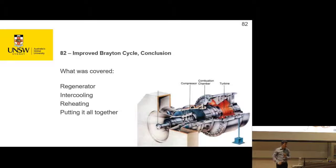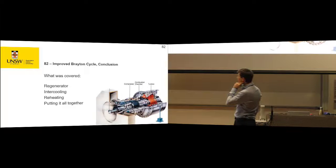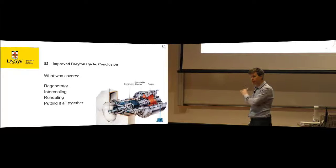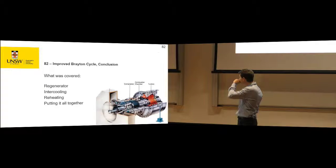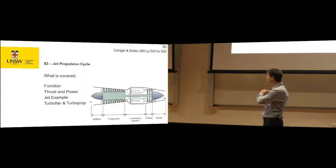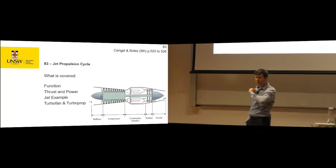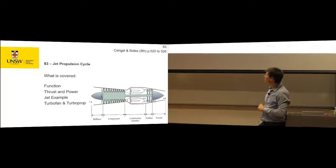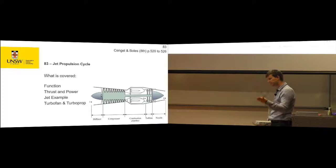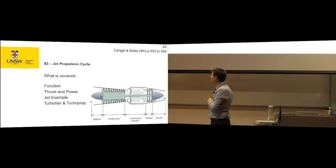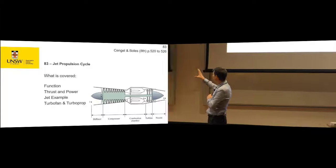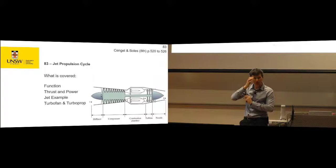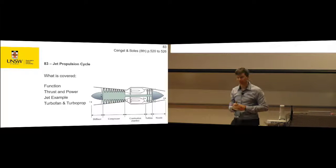We can modify our Brayton cycle to improve the thermal efficiency of the power we get out of the turbines. But what if we don't want power out of the turbine as a goal? An example of that - and I think this is the only cycle we'll do in the heat engine system where this applies - is the jet propulsion cycle, which doesn't actually want electrical power out of the turbine. It wants thrust, so the whole way we look at the cycle is a little bit different.